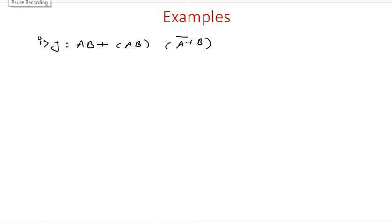Hello everyone. In this video we are going to discuss additional examples of simplifying Boolean expressions using the postulates. So we have the first example now. It is given: y is equal to ab plus ab into a-bar.